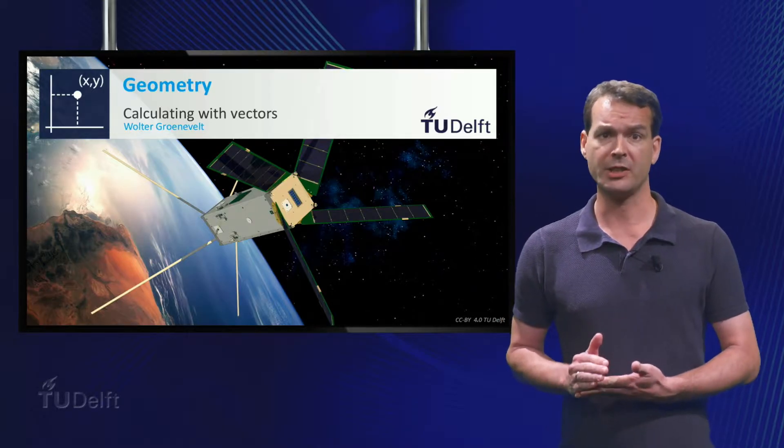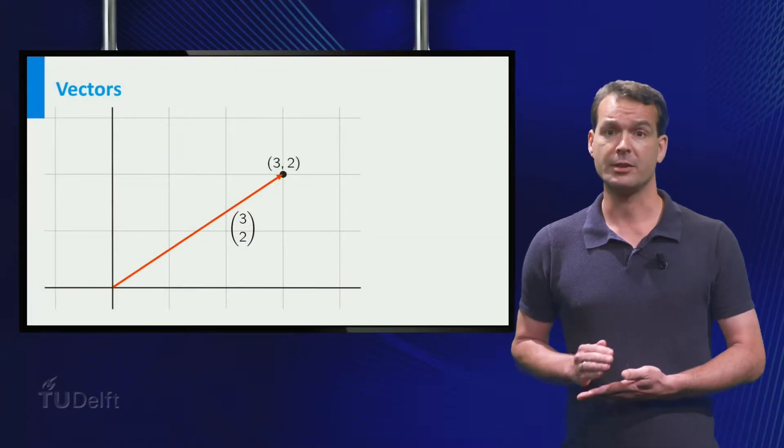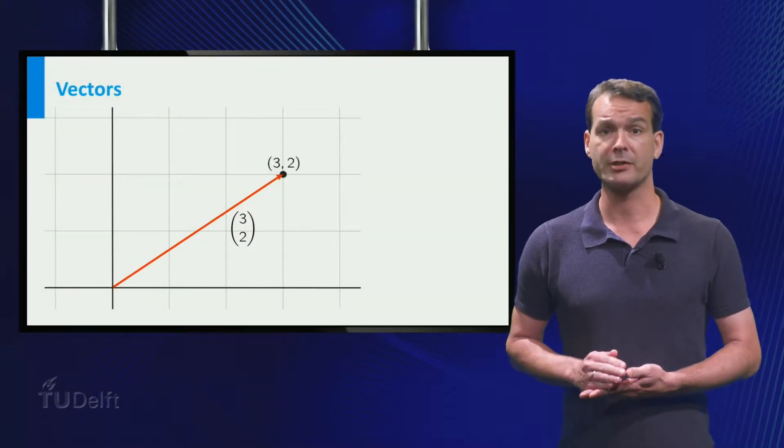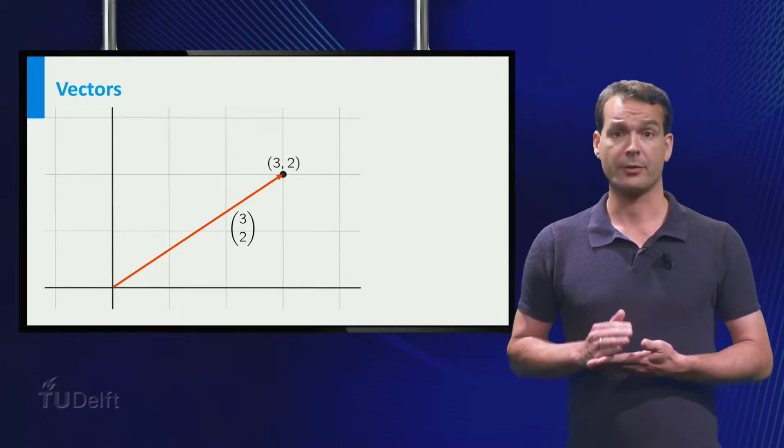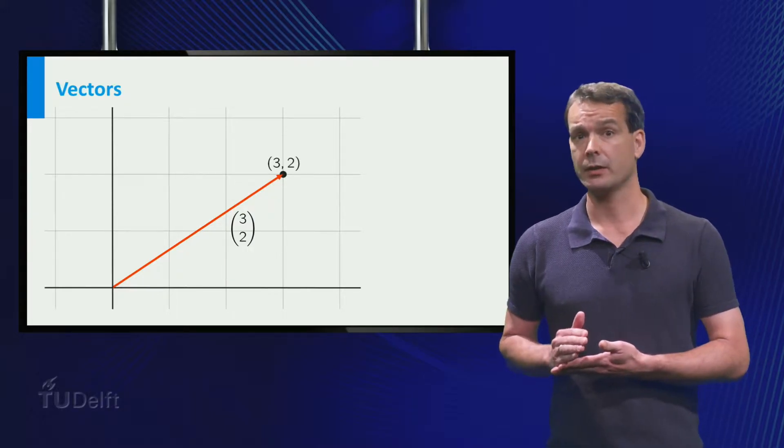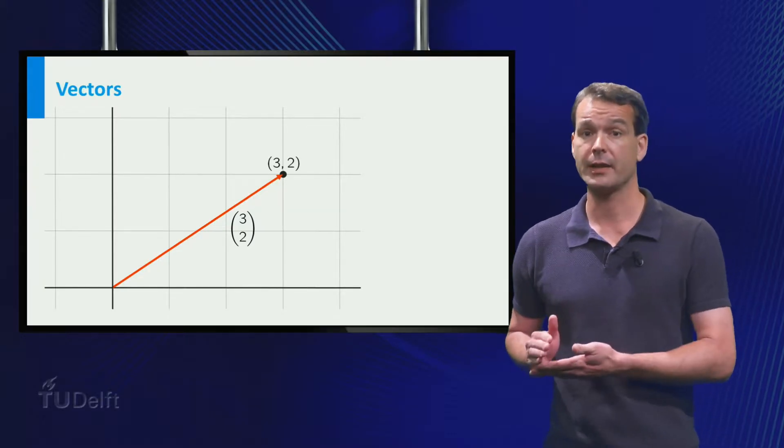In this video you will see how you can calculate with vectors. Here you see the vector from the origin to the point. We denote this vector by a 3 and a 2 on top of each other, which means that from the starting point you move 3 to the right and 2 up.